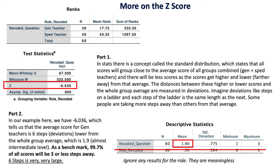Below the Z score of negative 6.036, we have the statistical significance value, and we're looking to see if that number is less than 0.05. That tells us there is a greater than 95% chance that this difference is not due to random chance — meaning the difference is meaningful. We see here the value is 0.000, which is less than 0.05. So that tells us there's a 95% chance that this difference is not due to random chance.